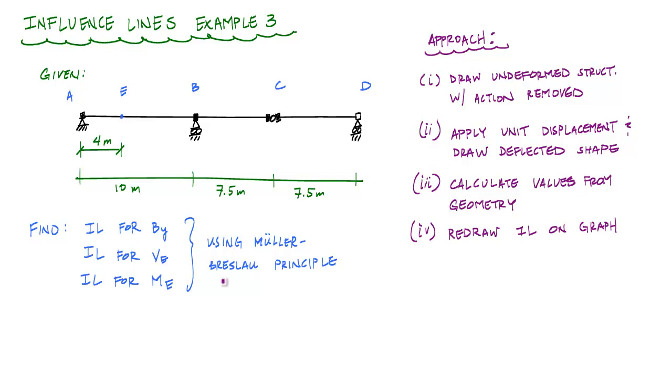We're going to do this using the Mueller-Bresslaw principle, which really is just saying that if you take the action of a structure, replace it with the unit displacement or rotation, that deflected shape is the influence line.